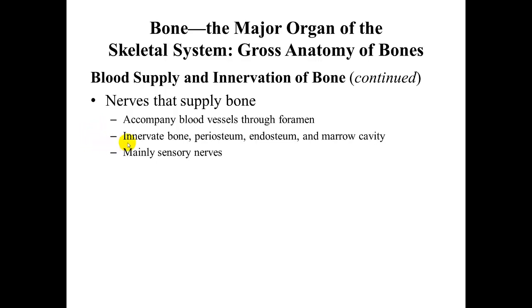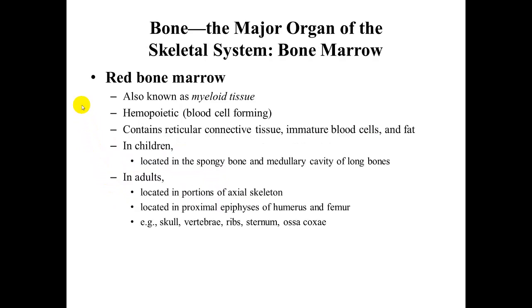Nerves also supply the bone, which is part of the reason your bones hurt when you break them. They accompany the blood vessels through the foramen and innervate the bone, periosteum, endosteum, and the marrow cavity — basically every part of the bone — and are mainly sensory nerves. The red bone marrow is hemopoietic, meaning it forms all blood cells: white blood cells, red blood cells, and platelets. It contains reticular connective tissue, immature blood cells, and fat.